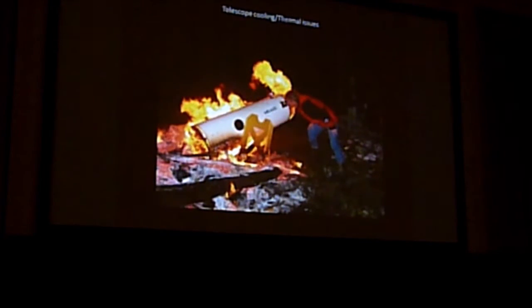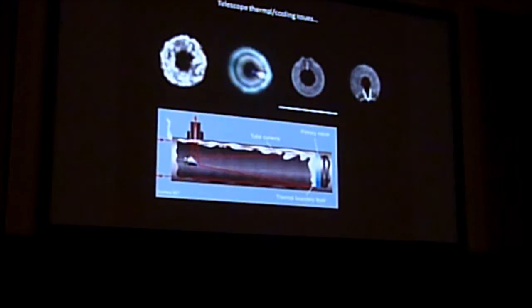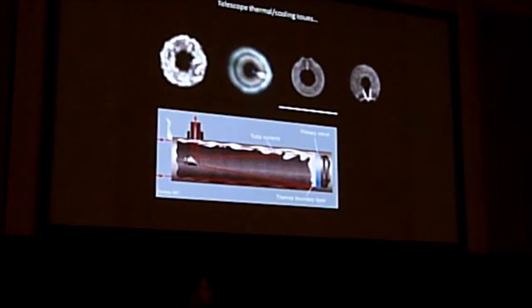Now, just to talk a bit more about telescope cooling issues. You can see here a particularly bad case of tube currents. This is something that's often overlooked by many observers, and that is just making sure the telescope is at ambient temperature, so the same temperature as the air outside.